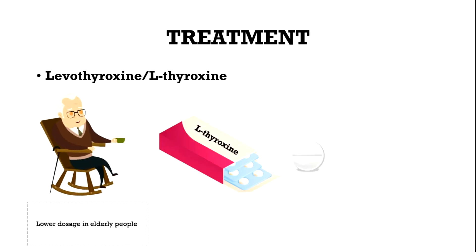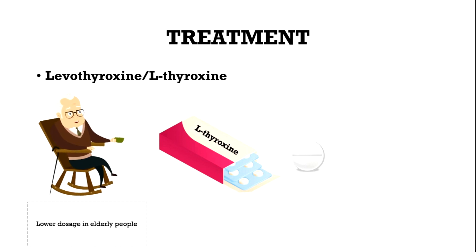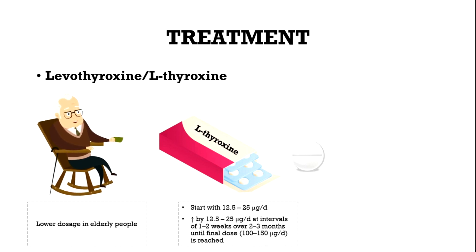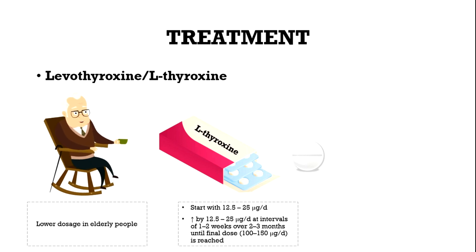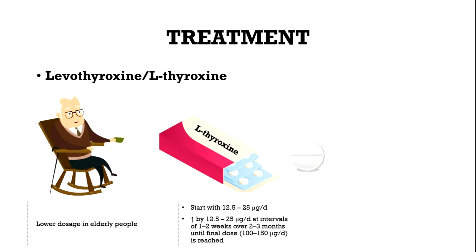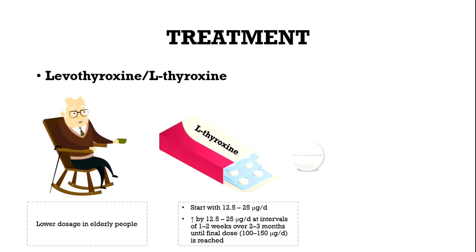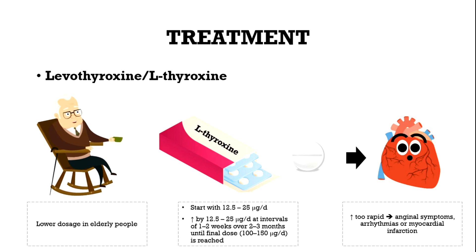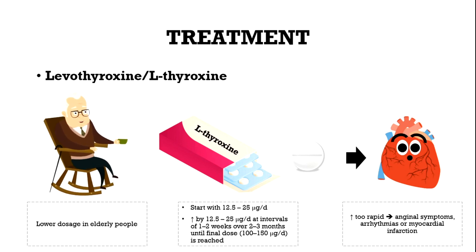Elderly people are often hypersensitive and require a lower dosage. Elderly patients and people with heart disease start with 12.5 to 25 micrograms per day and increase by this amount at intervals of 1 to 2 weeks over a period of 2 to 3 months until the final dose of 100 to 150 micrograms per day is reached. If the increase is too rapid, it can lead to anginal symptoms, arrhythmias, or myocardial infarction.